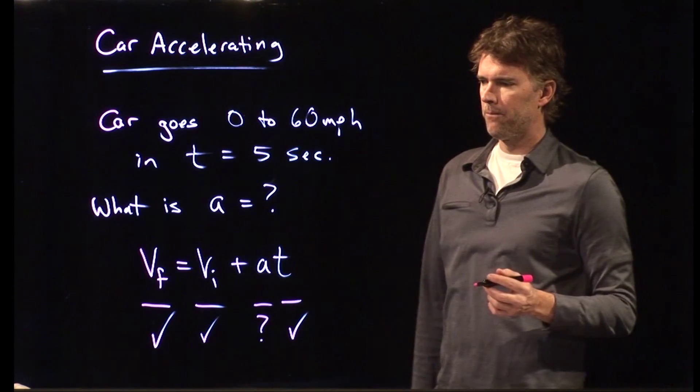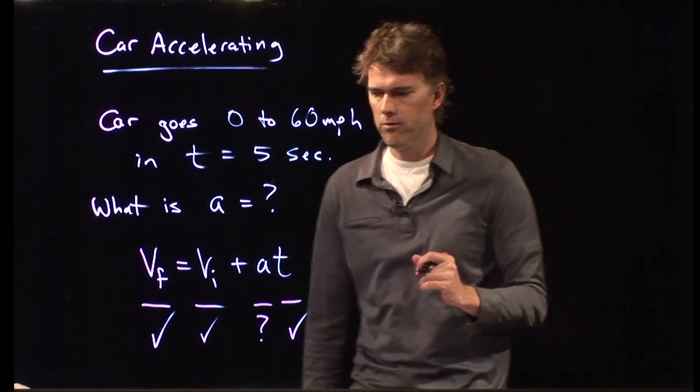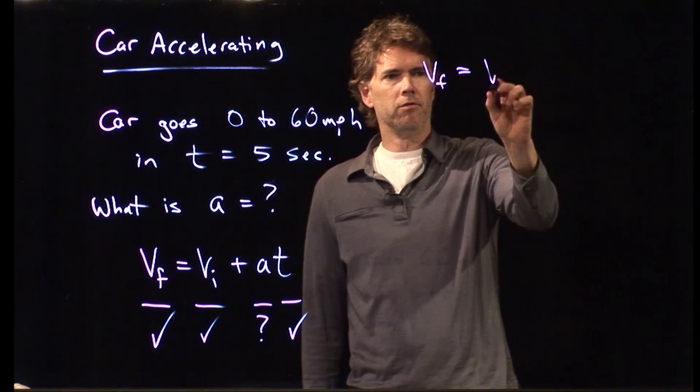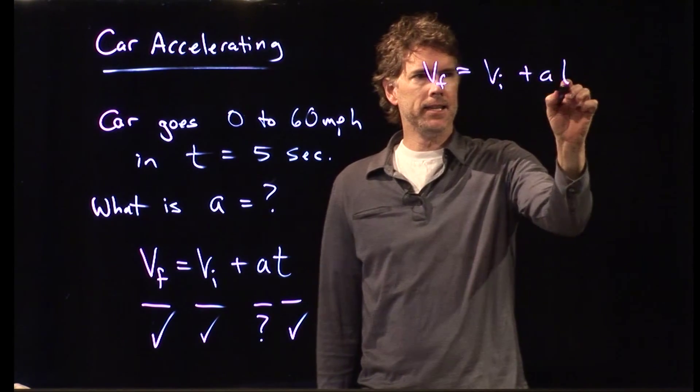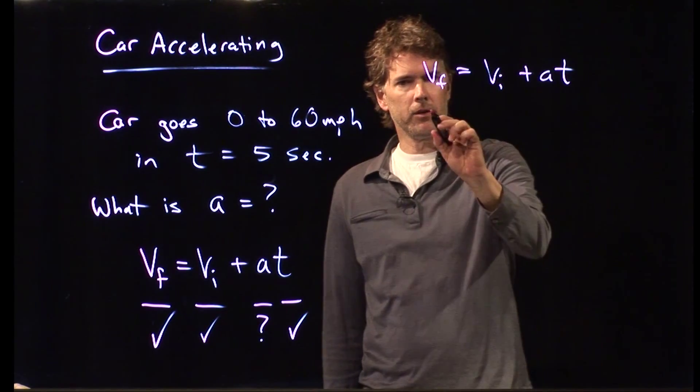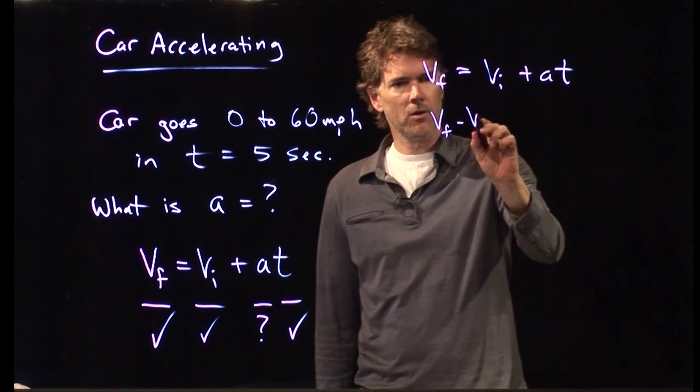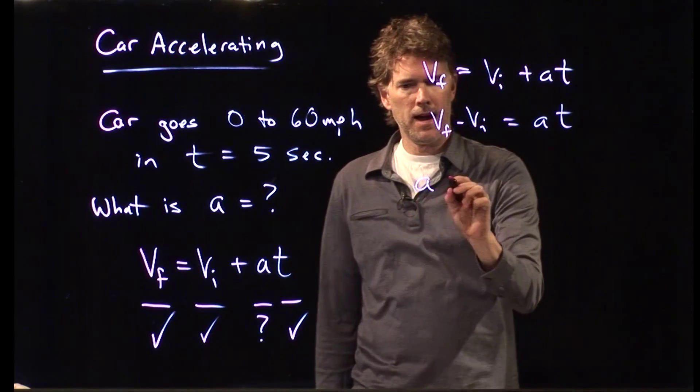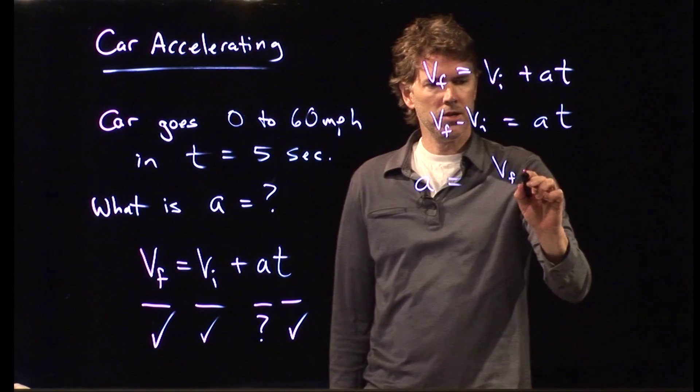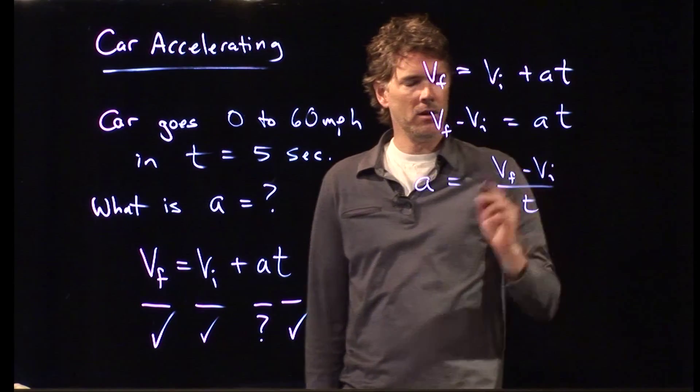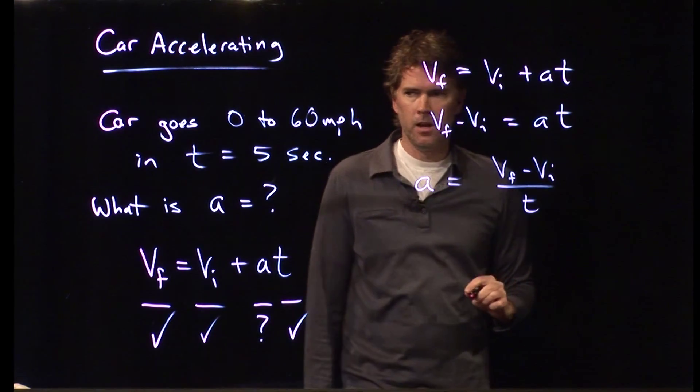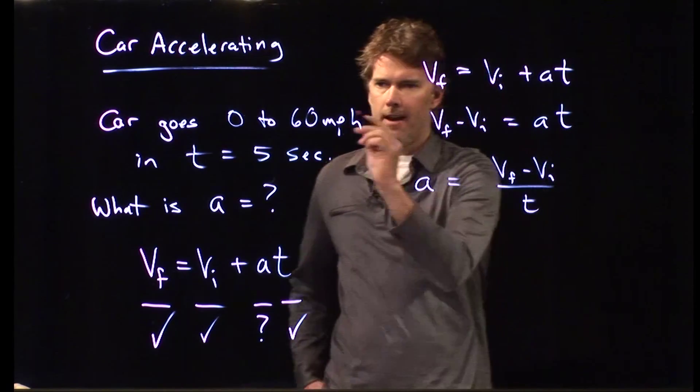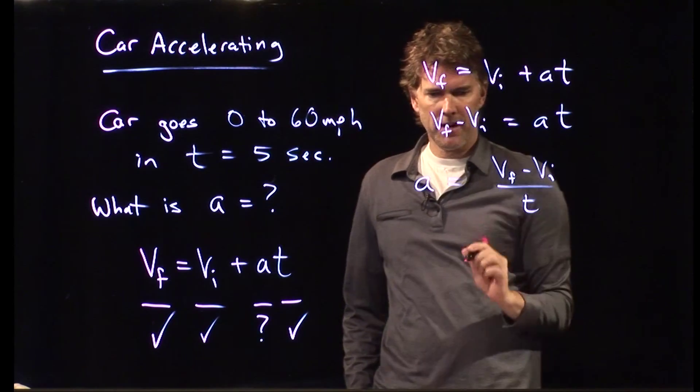So we can take that equation and we can solve for acceleration. We have VF equals VI plus AT. Now we can solve this for acceleration. We'll move VI over to the other side and divide by T. Acceleration is VF minus VI over T. Now we know VI is going to be 0, that's going to drop out of our equation. VF is 60 miles per hour and T is five seconds.